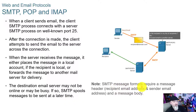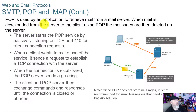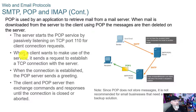If the destination email server is not online or is busy, SMTP spools messages to be sent at a later date. SMTP message format requires a message header, a recipient email address, a sender email address, and a message body — three parts. POP is used by an application to retrieve mail from a mail server. When mail is downloaded using POP, messages are then deleted on the server — that's the big distinction. The server starts the POP service by passively listening on TCP port 110. When a client wants to connect, a TCP connection is established, the POP server sends a greeting, commands and responses are exchanged, and the email gets downloaded and deleted off the server.